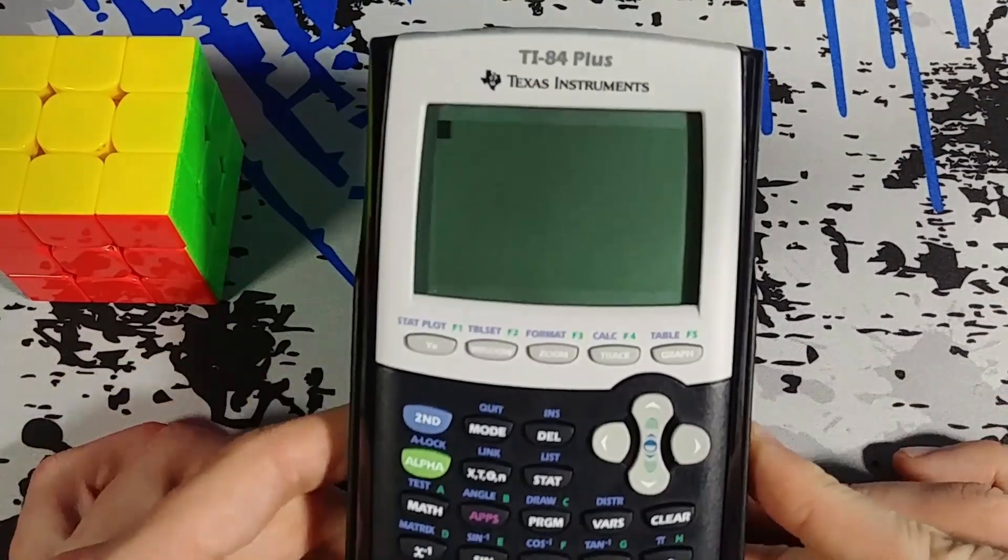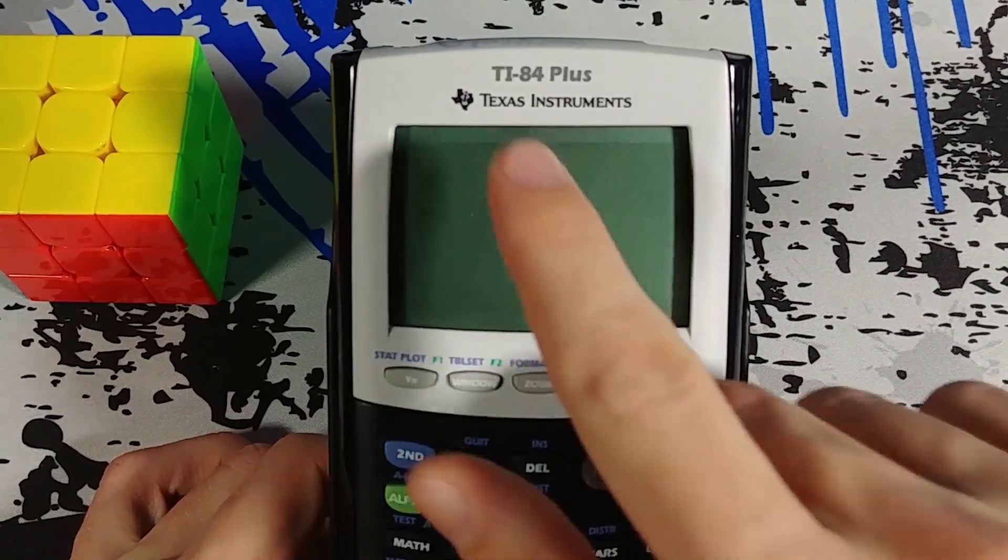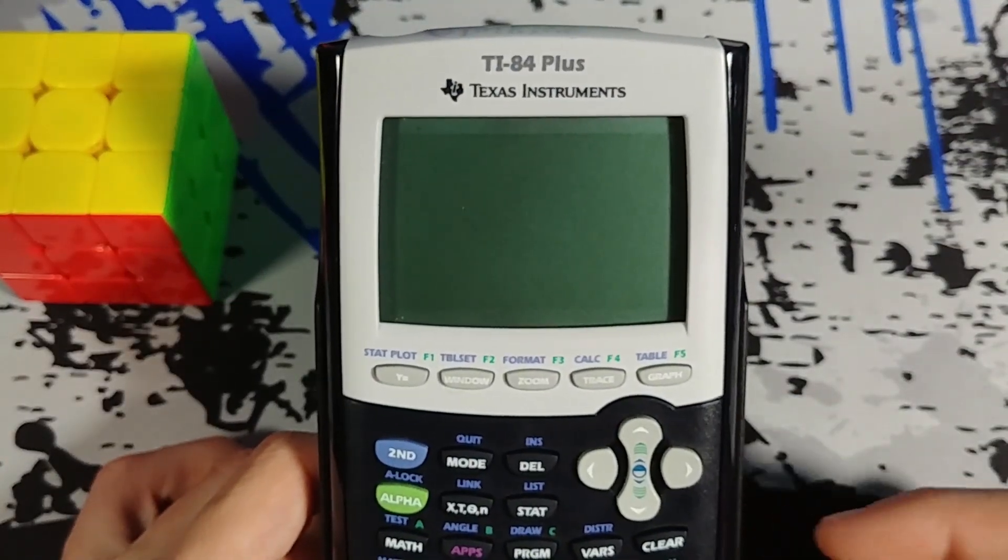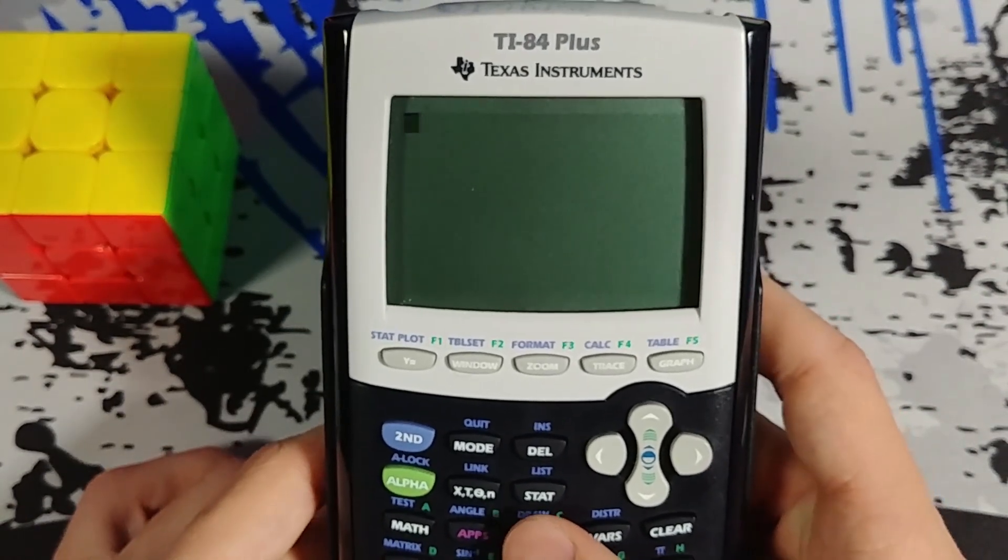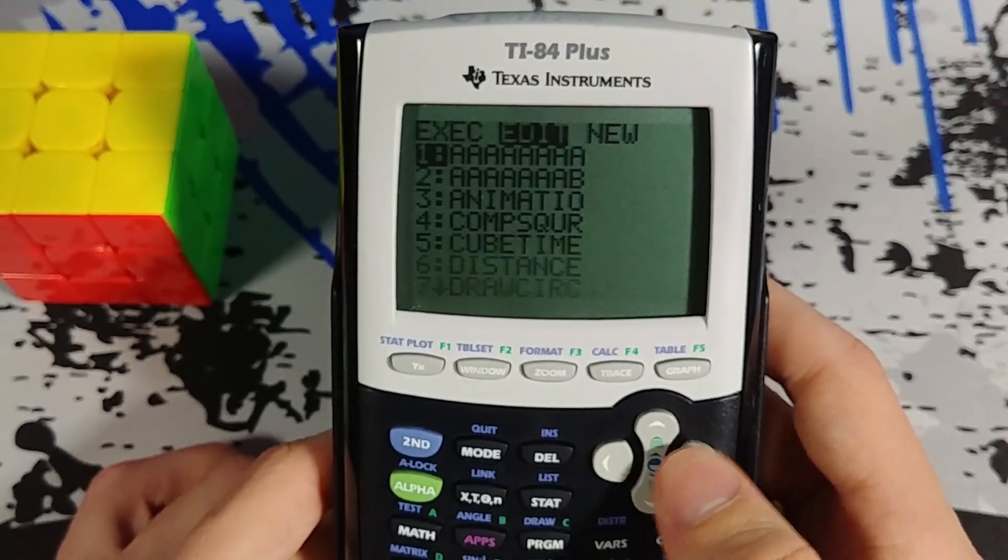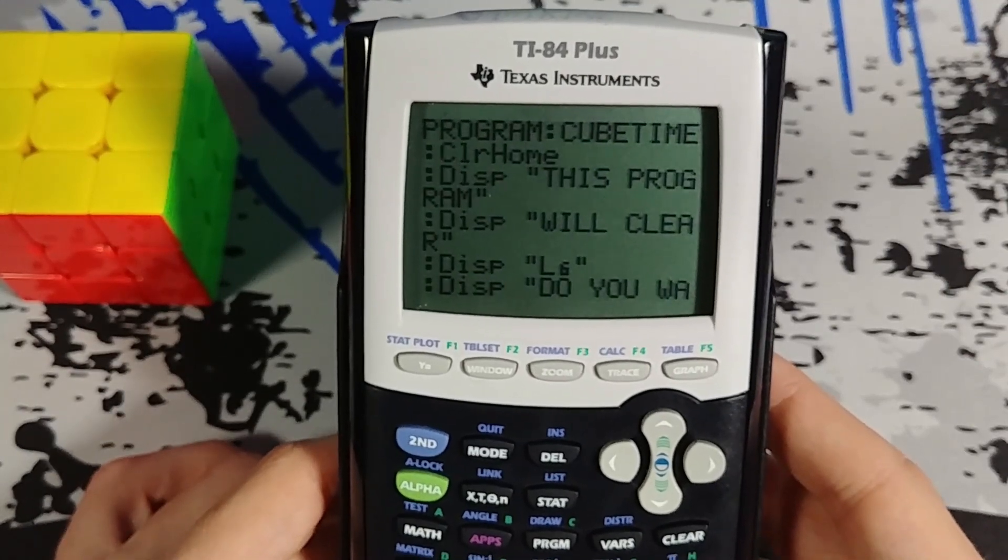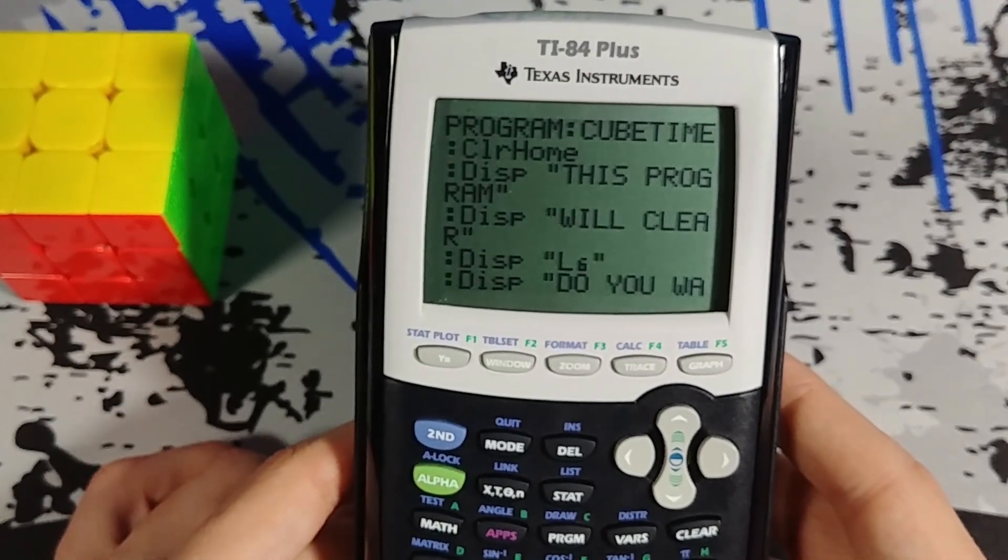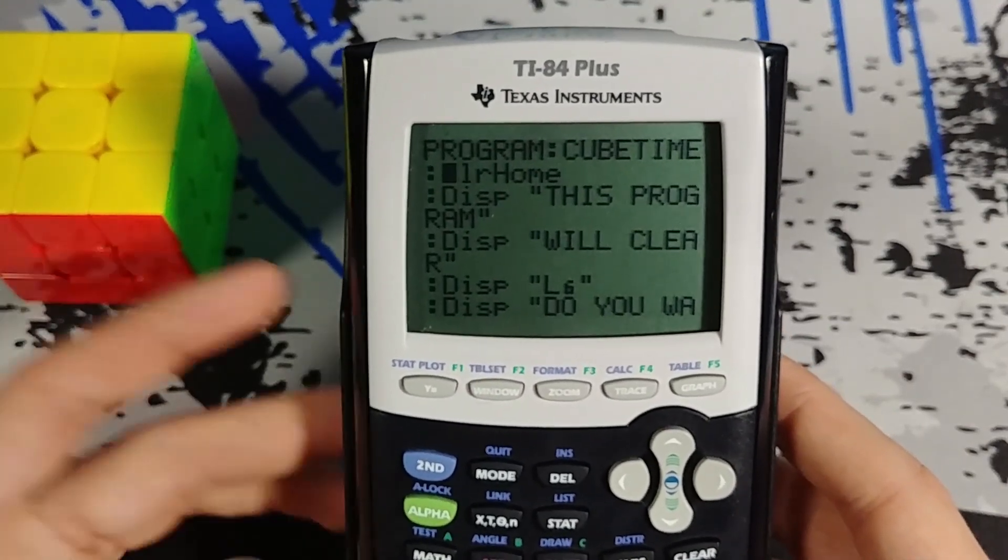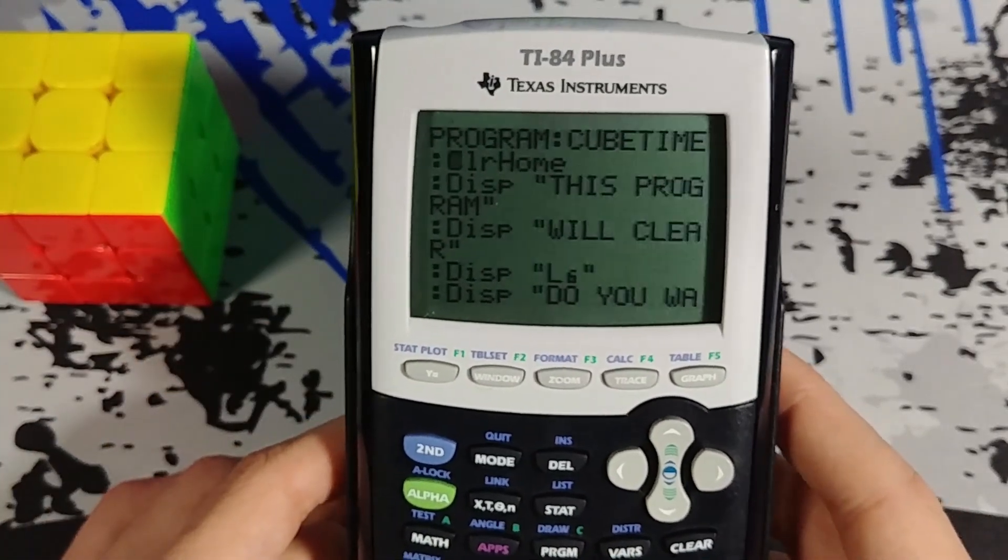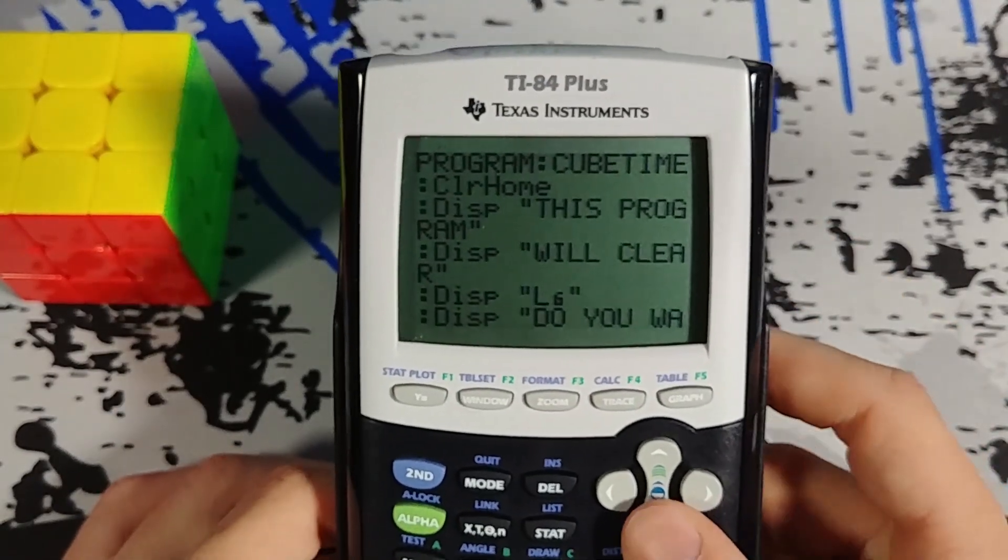So first of all, yes, you can actually program on a graphing calculator. I have the TI-84 Plus, but really any of the TI 80 series will work. So I'm going to go under my programs and we're going to go over to edit. And let's take a look at what is in cube time. So this programming language is pretty sure just completely unique to the calculators. But if you know the basics of programming, this will be easy to understand. First I start off by clearing the home screen. Very simple, I just want a blank slate.